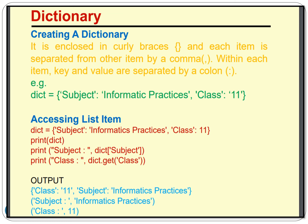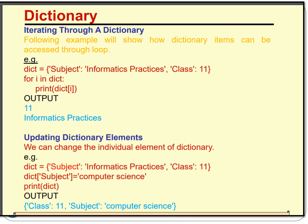Let's take another example: we create a dictionary 'dict' which has 'subject' as a key and 'informatic practice' as a value, and 'class' as a key with '11' as a value. If we print dict, it will print 'class: 11, subject: informatic practice'. If we print dict['subject'] it will print 'informatic practice'. We can also use dict.get('class') — in that case it will get the value of the 'class' key.